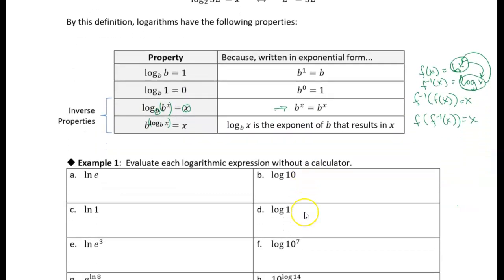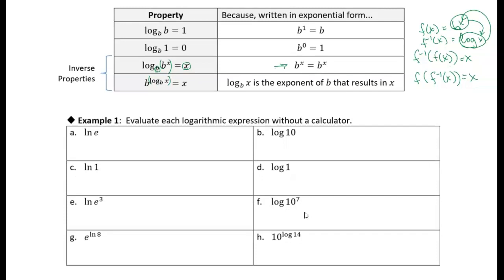Let's go to example one and practice these properties. The natural log has a base of E, so the natural log of E is asking: what power do we raise E to in order to get E? It's just 1 — this uses the first property since the base is E. Similarly, the common logarithm has a base of 10, so log of 10 is asking what power we raise 10 to in order to get 10, which is also 1.